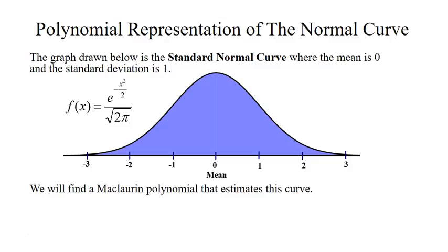What we want to do is find a polynomial that estimates the curve. We're going to find a McLaurin polynomial because they are centered at 0. The series representation for the polynomial is the sum of n equals 0 to infinity of the nth derivative of the function evaluated at 0, divided by n factorial, times x to the power of n.